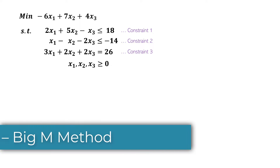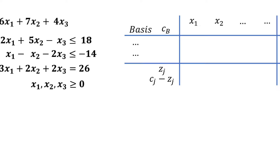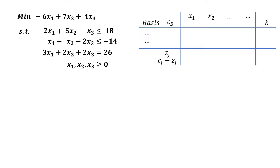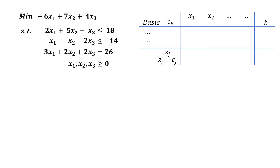In this video, I'll be solving this minimization LP problem using the simplest tableau structure. One of the solution approaches is to choose the largest negative value on the Cj minus Zj row to enter the basis, rather than the largest positive value as done in maximization problems. Another way is to change Cj minus Zj to Zj minus Cj. And another way is to convert the minimization problem to a maximization problem by multiplying the objective function by negative 1 — and that's what we'll do in this video.